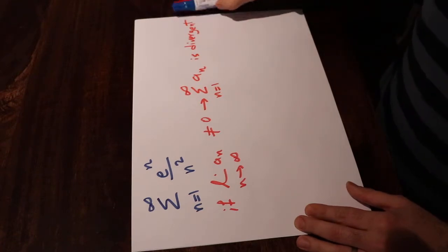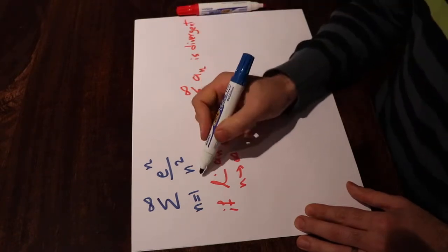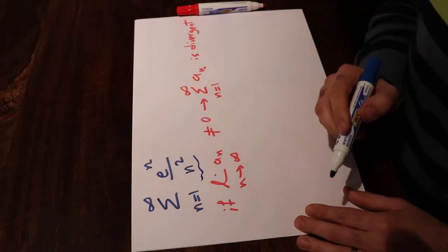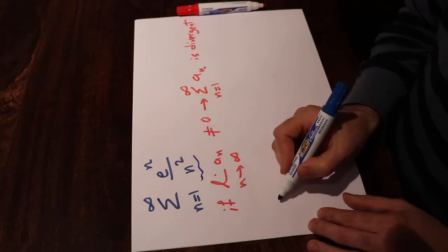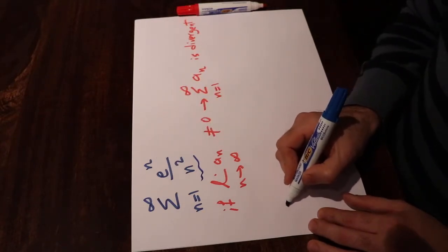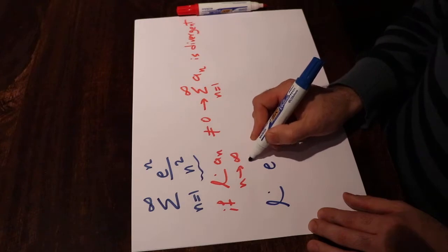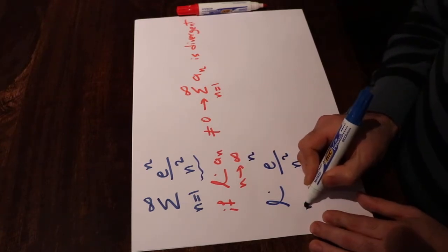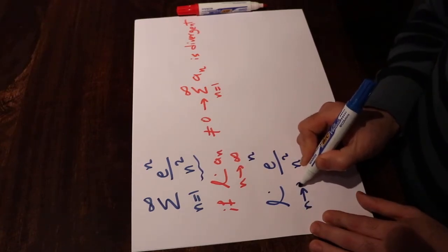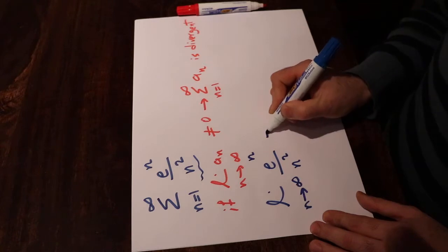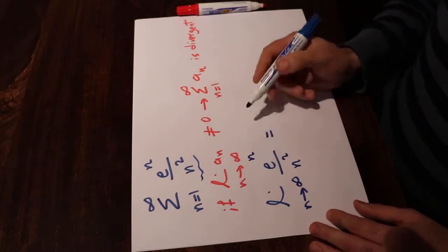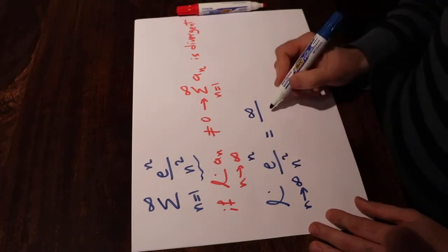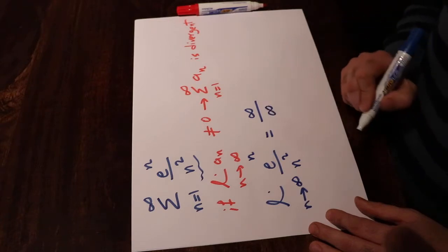So let's now calculate the limit of aₙ in this case, which is equal to e with the power of n divided by n². The limit of eⁿ divided by n² when n goes to infinity will be equal to infinity over infinity, because e to the power of infinity is infinity and n² will be infinity as well.